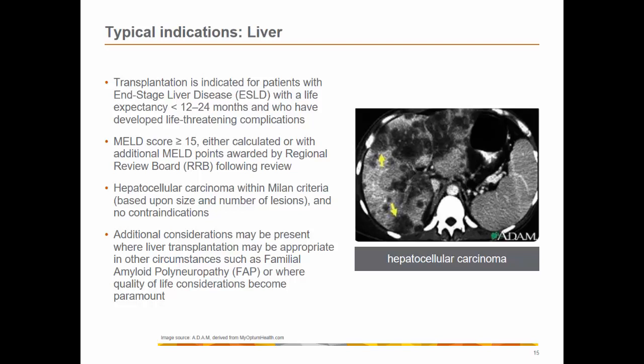Absolute contraindications for liver transplantation include elevated intracranial pressure greater than 40, low cerebral perfusion pressure less than 60 in patients with fulminant hepatic necrosis, severe pulmonary hypertension with a mean pulmonary arterial pressure greater than 50, sepsis, and metastatic hepatocellular carcinoma when the condition has led to poor outcomes. Nearly all donated livers come from size- and ABO-matched brain-dead heart-beating donors.